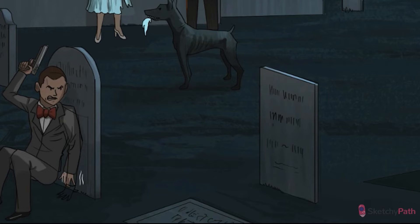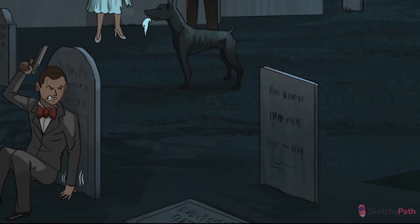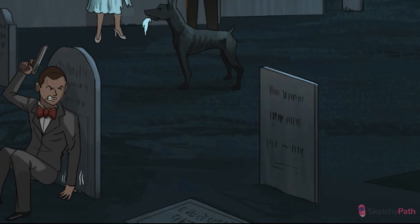Both hypo- and hyperthyroidism can cause cramping and proximal muscle weakness. In hyperthyroidism, it's referred to as thyrotoxic myopathy and typically does not cause an increase in creatine kinase. In contrast to hypothyroidism, you don't really see much muscle atrophy either. The pathogenesis of myopathy in hyperthyroidism isn't quite clear — it may be due to increased metabolism and energy usage, protein degradation, or inefficient energy usage by muscle cells. It usually manifests as proximal muscle weakness, such as hip flexors and quadriceps, which explains why our secret agent is having trouble getting up from his hiding spot.